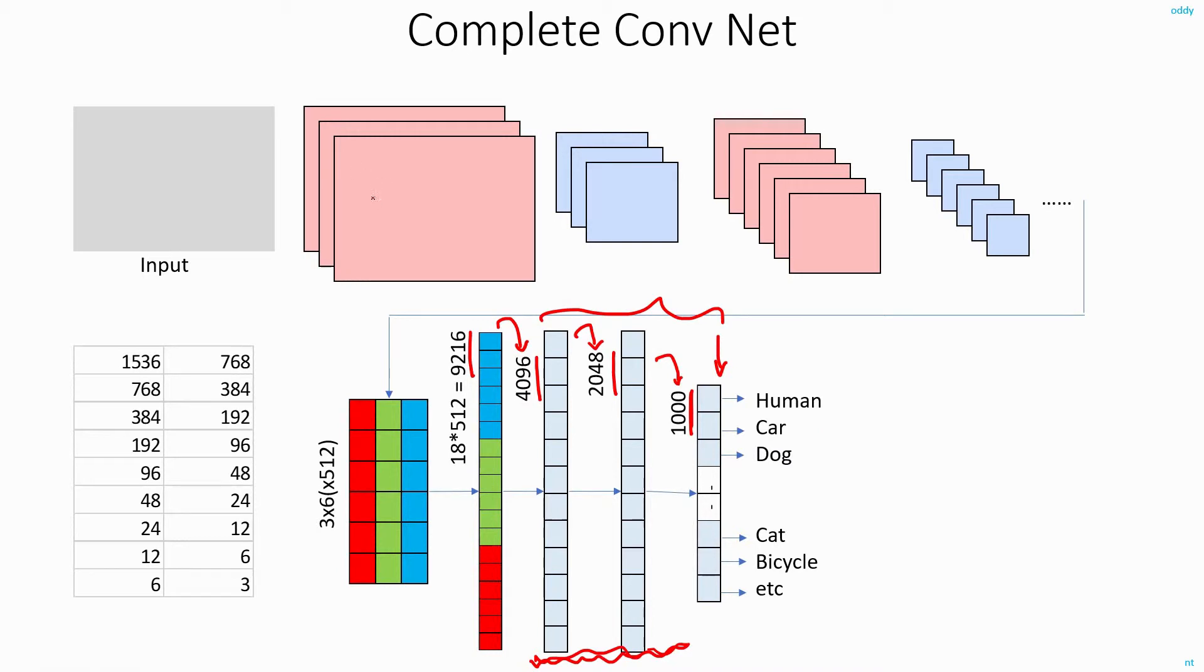This is the complete typical convolutional neural network. You have the major components are convolution layer, pooling layers and you cascade these things.